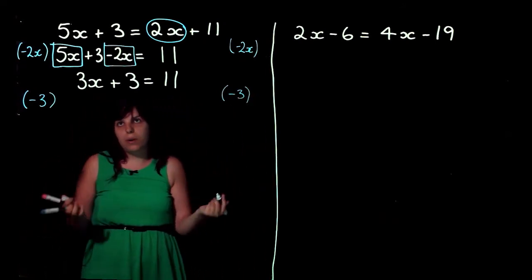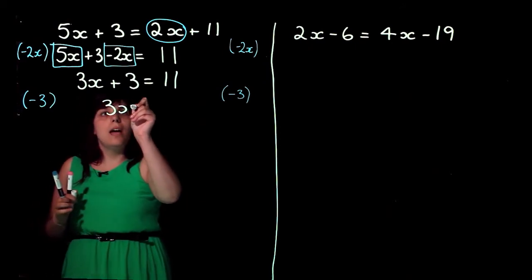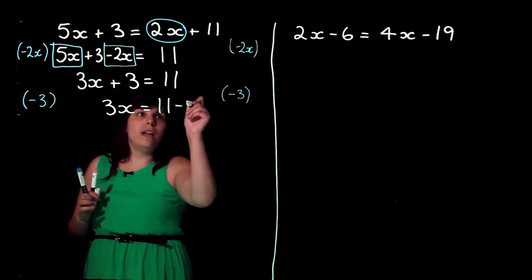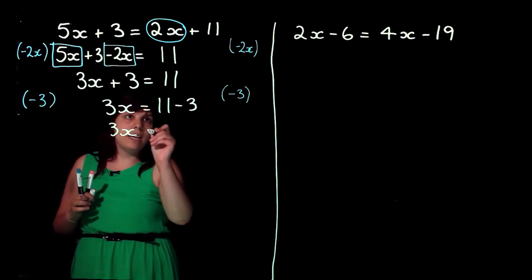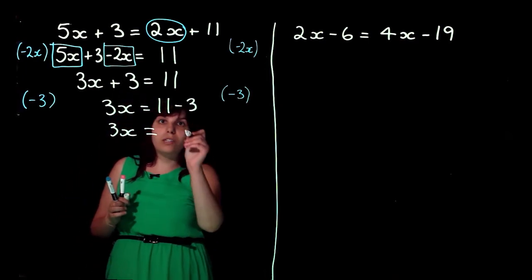So, 3x plus 3 minus 3 is just going to be 3x. And on this side, we've got 11 minus 3. So, that simplifies as 3x equals 11 minus 3 is 8.